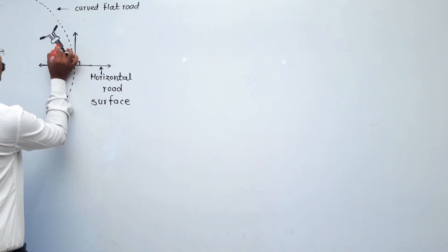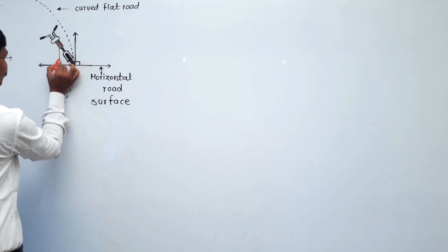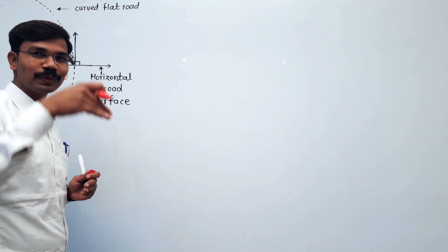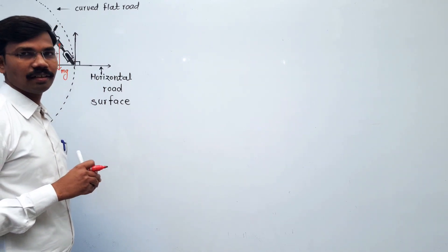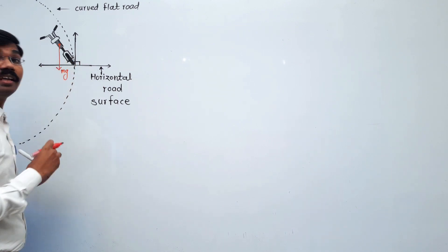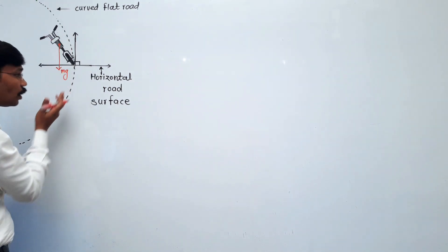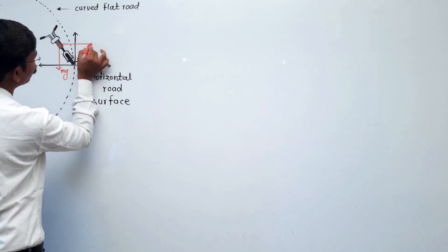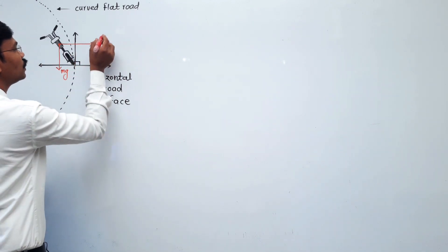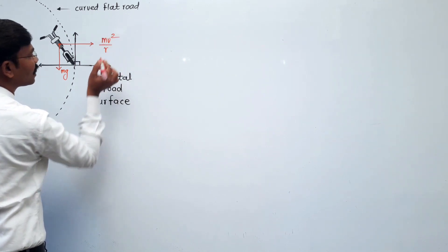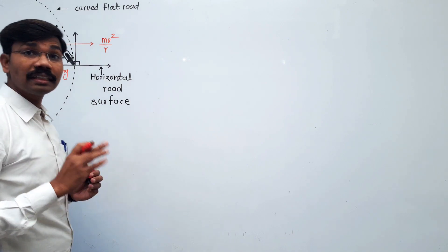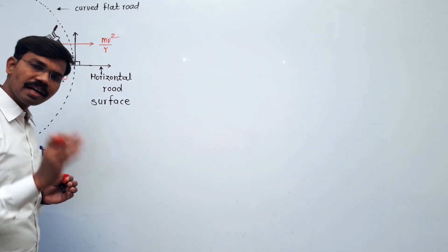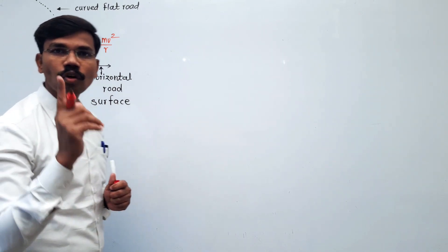The weight of the bicycle rider acts in the vertically downward direction. There are three forces: the weight of the bicycle rider downward, the centrifugal force, and the third force is the reaction force. This reaction force is not a normal reaction force in the usual sense.